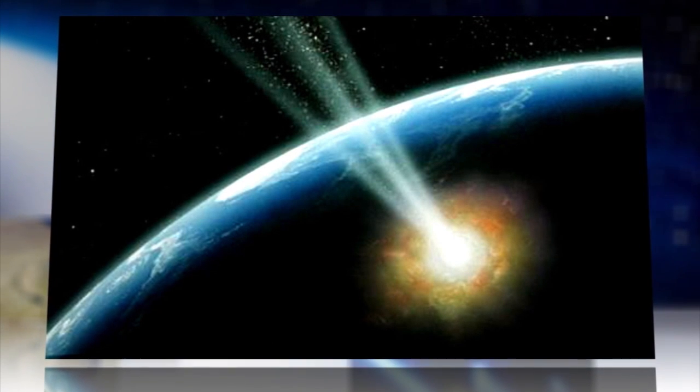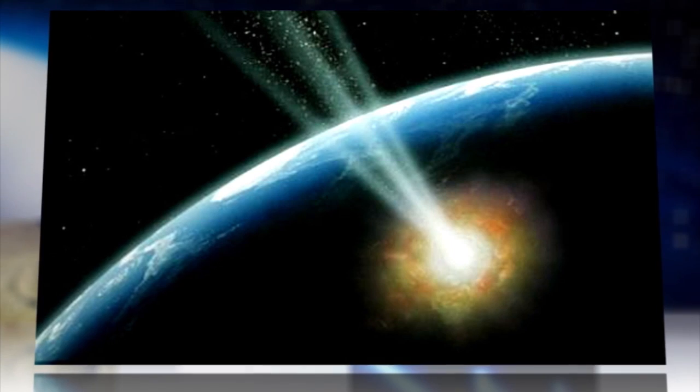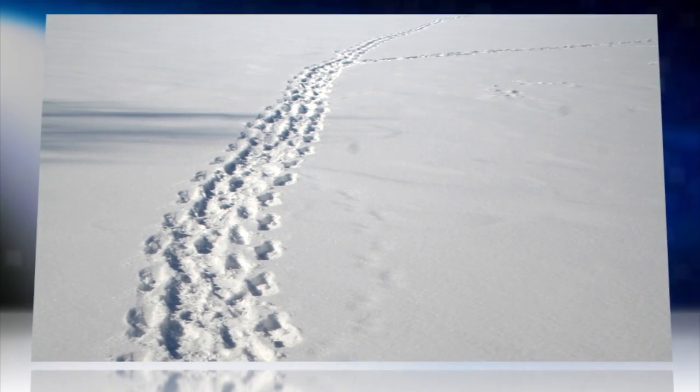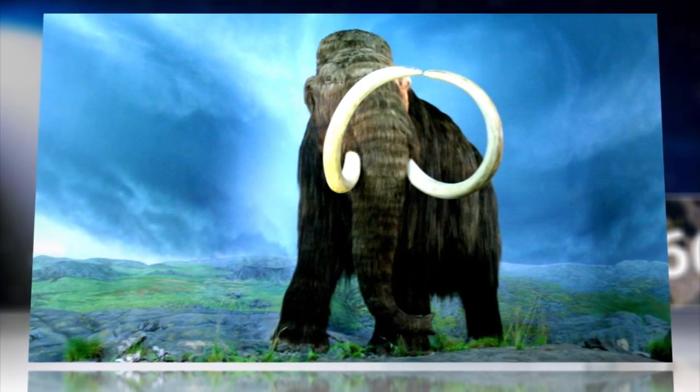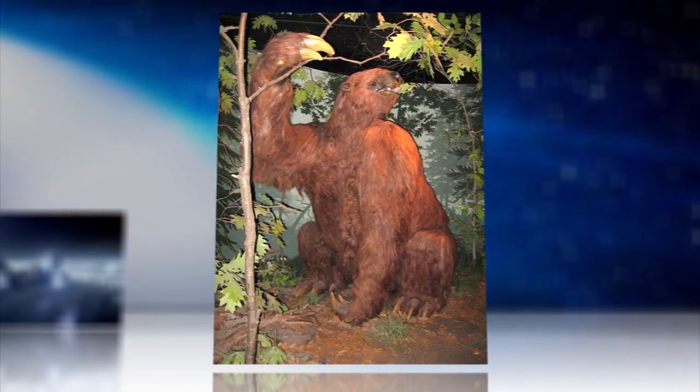likely struck the Earth at several epicenters 13,000 years ago as part of a swarm of meteorite or comet fragments, and that impact may have begun what is known as the Younger Dryas, an unusual cold climactic period that coincided with the massive extinction of everything from mammoths and giant ground sloths to fauna that covered the planet at the time.